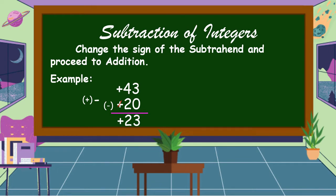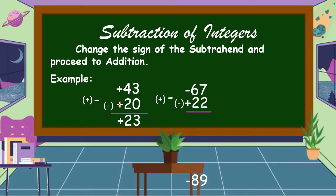Another example: negative 67 minus positive 22. First, change the sign of the subtrahend — from positive, it becomes negative. Proceed to addition. Our addends are now negative 67 and negative 22. They have the same sign, so we add the numbers. 67 plus 22 is equal to 89, and copy the common sign which is negative. Therefore, the answer is equal to negative 89.